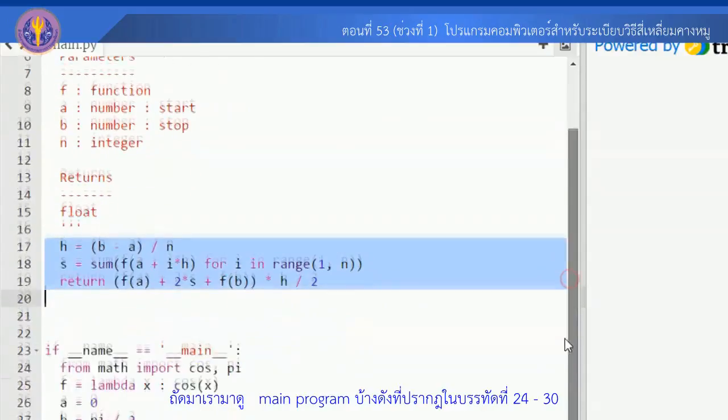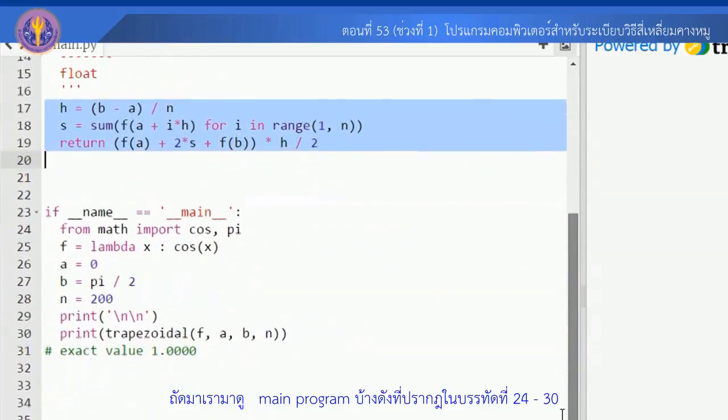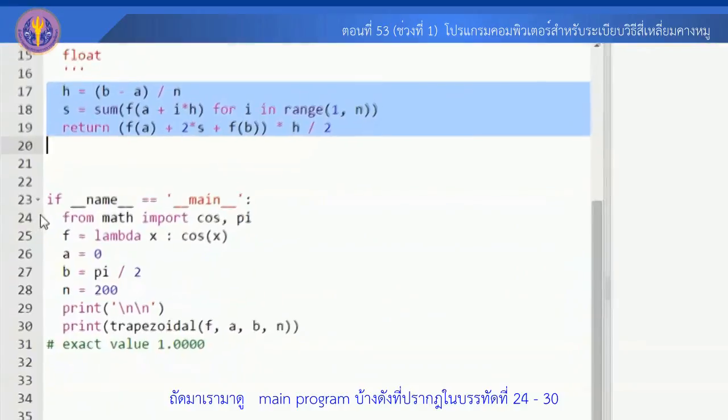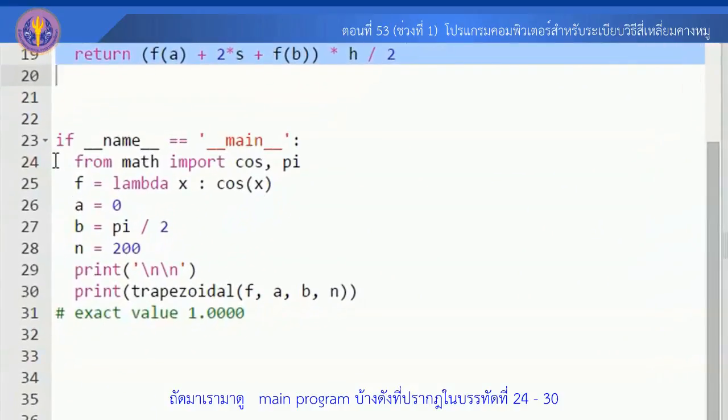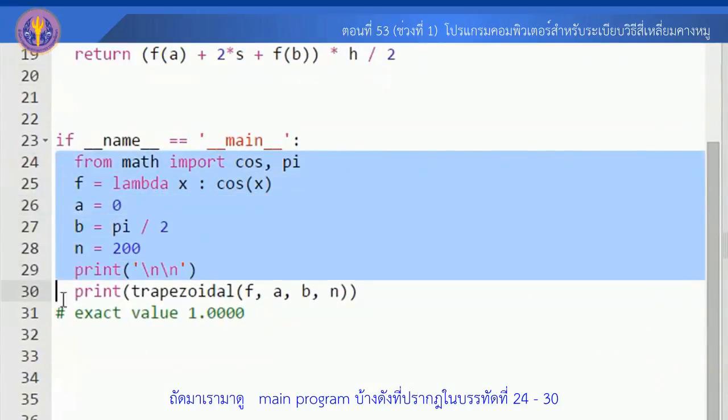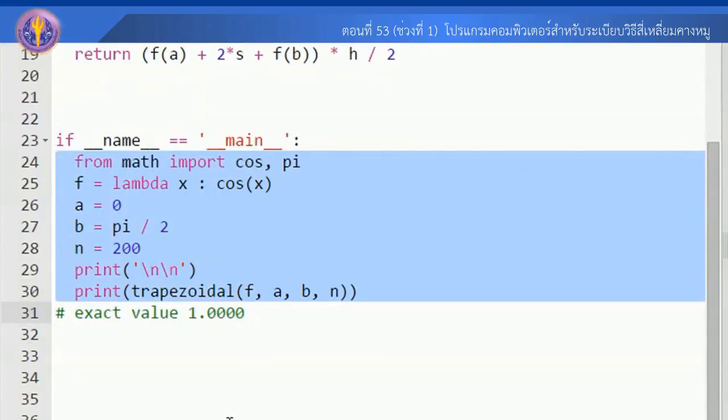นี่คือโปรแกรม trapezoidal มาดู main program กันที่บรรทัด 24 ถึง 30 มาดูที่บรรทัด 25 เราจะใช้ฟังก์ชัน f